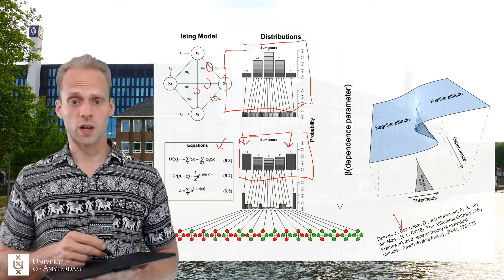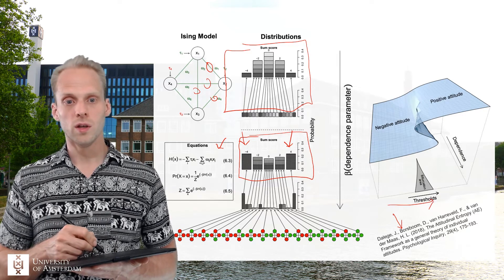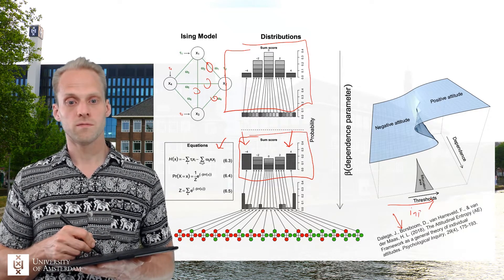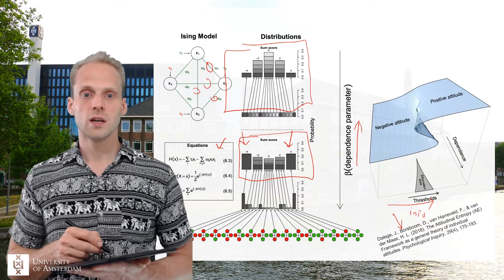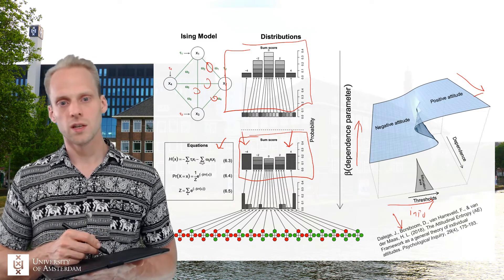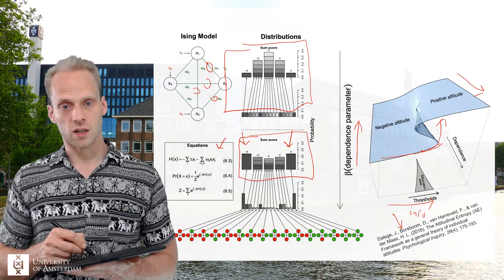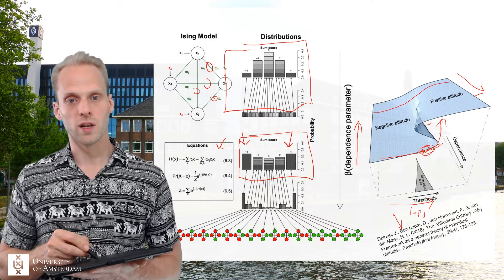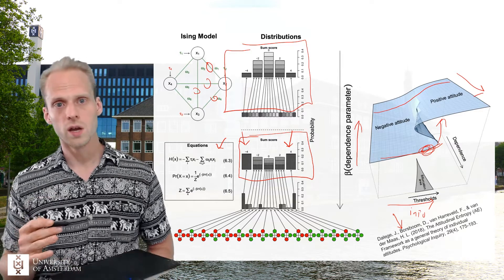Jonas also talks about how these attitude networks can describe polarized behavior where you can give information to people, but it takes a long time to switch your opinion. There's this beautiful cusp catastrophe where the x-axis is information, the y-axis is the total number of active attitude elements based on the sum score, and the z-axis is your involvement. On the front of this cusp - which is the behavior of the Ising model under certain assumptions - you have a bipolarized effect where you need to give a lot of information to convince people to switch to the other side. At the back, this is more linear behavior.